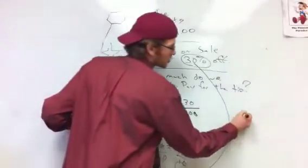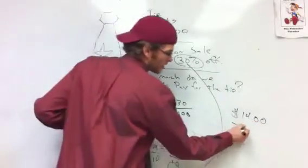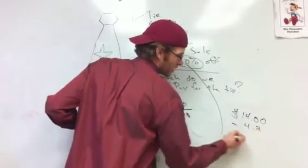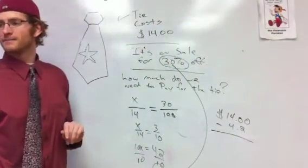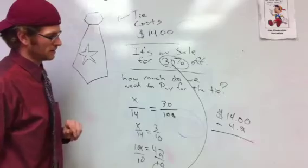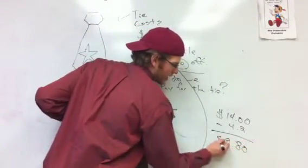We have to take our original total for the tie, which is $14, and then we need to subtract our discount, which is minus 4.2 dollars, and what will the final price of the tie be, Matea? $9.80.